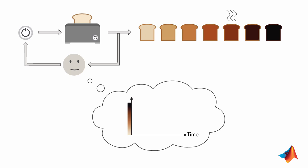On the y-axis, you have the bread color that you're watching, and on the x-axis, you have the time. This is what you want. Then, you start toasting and this is what you see.